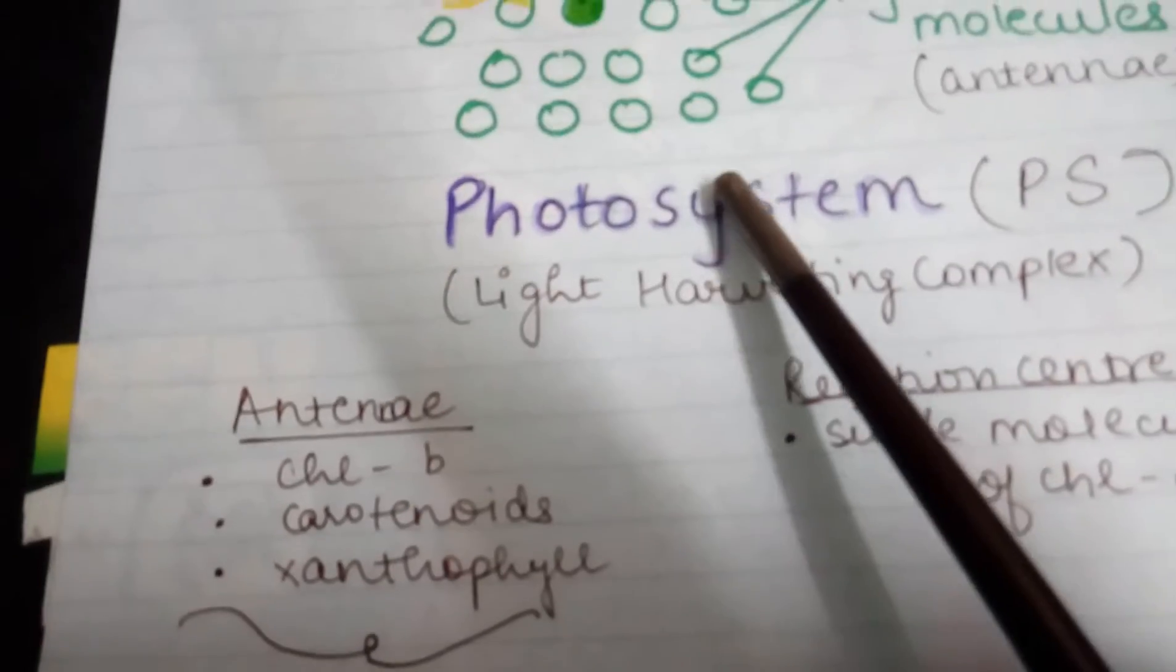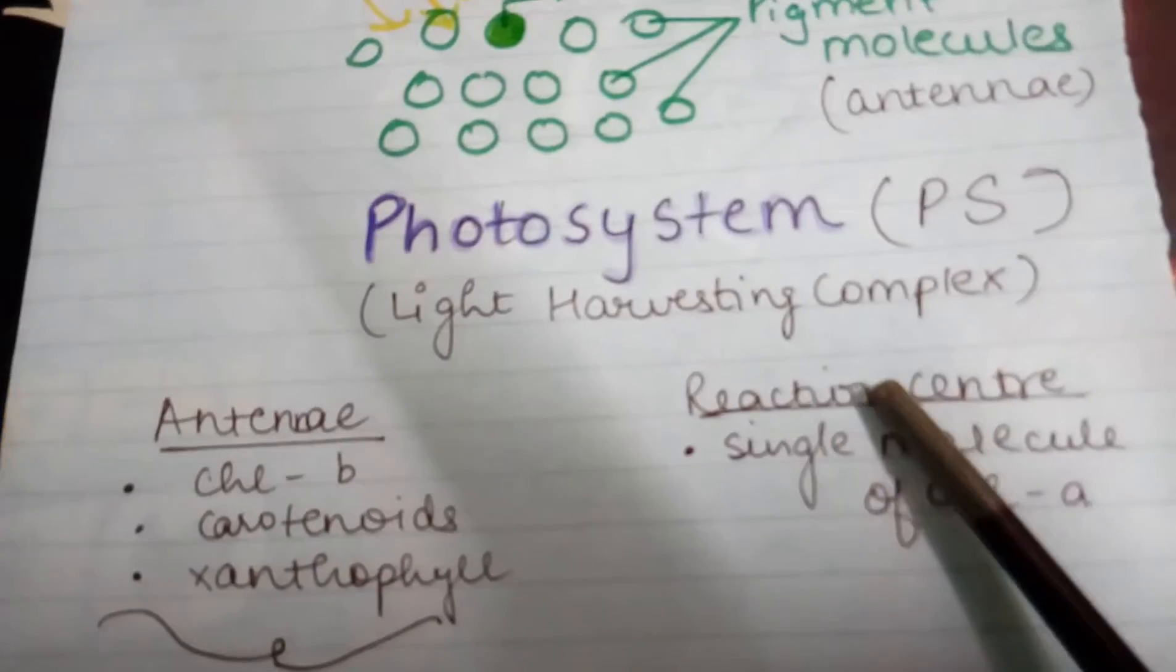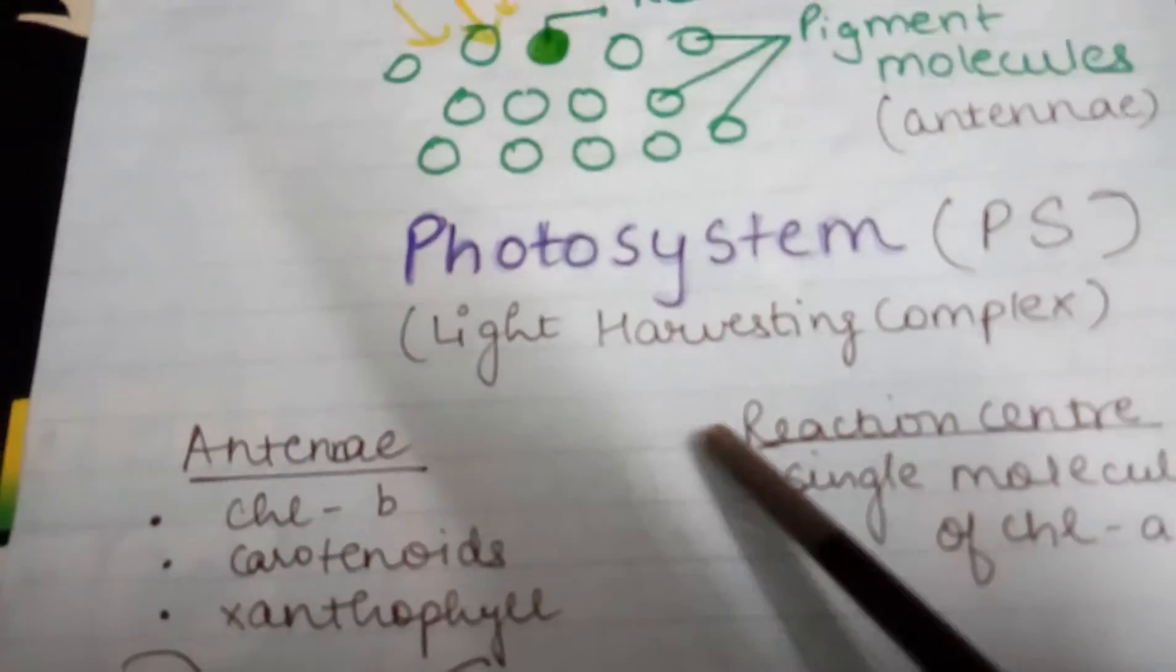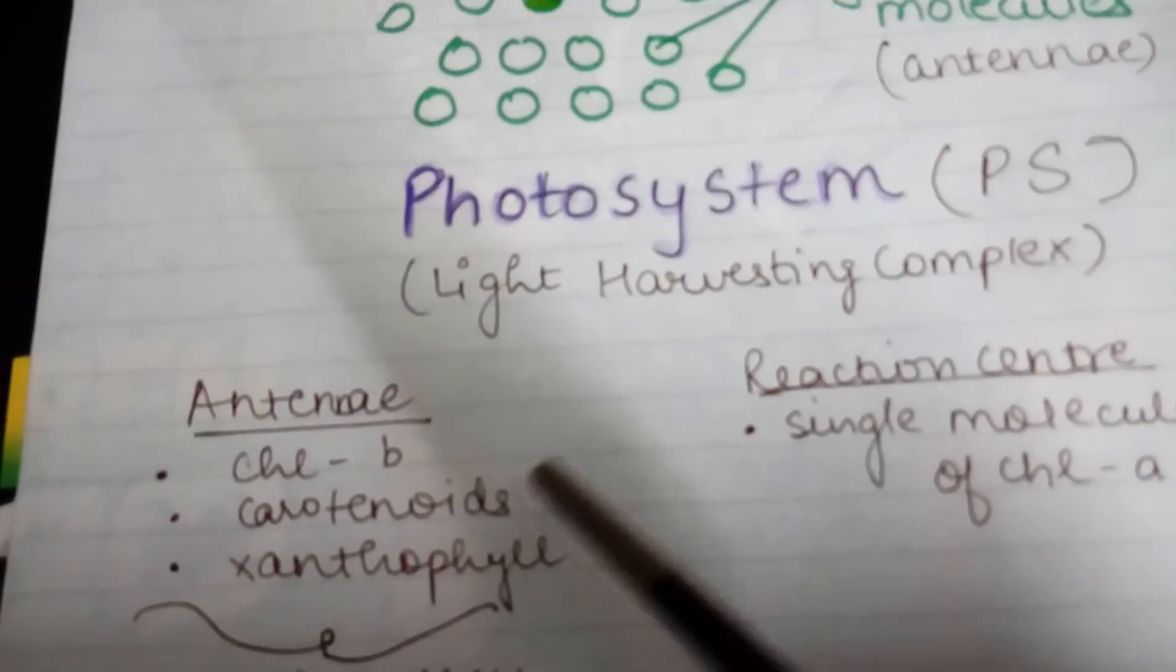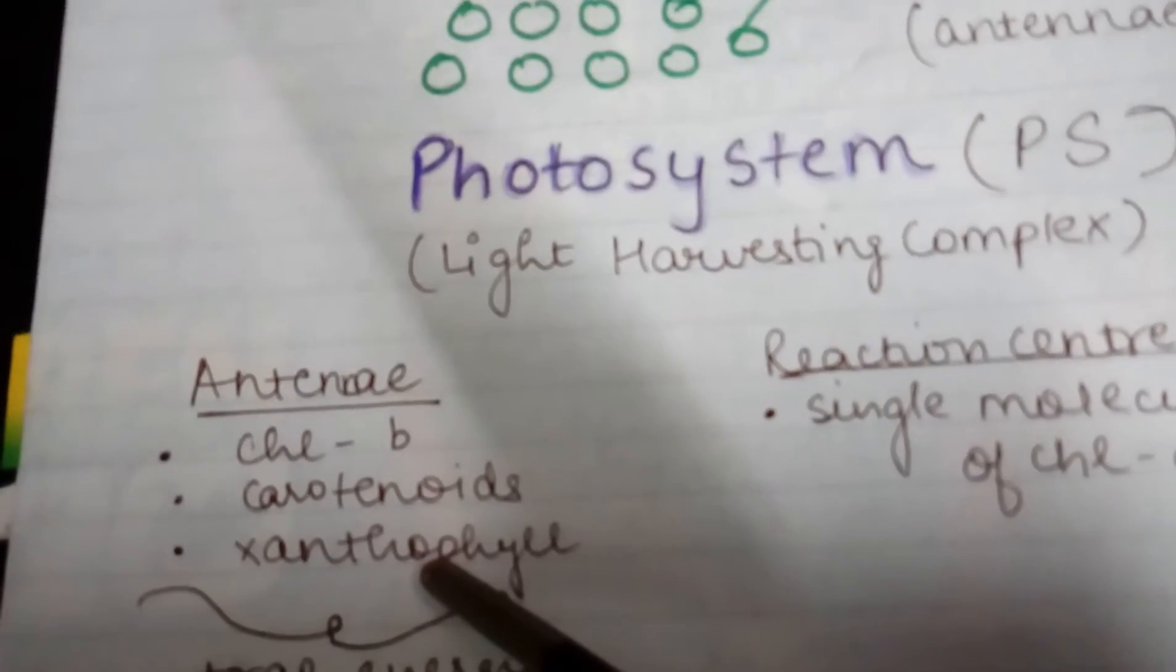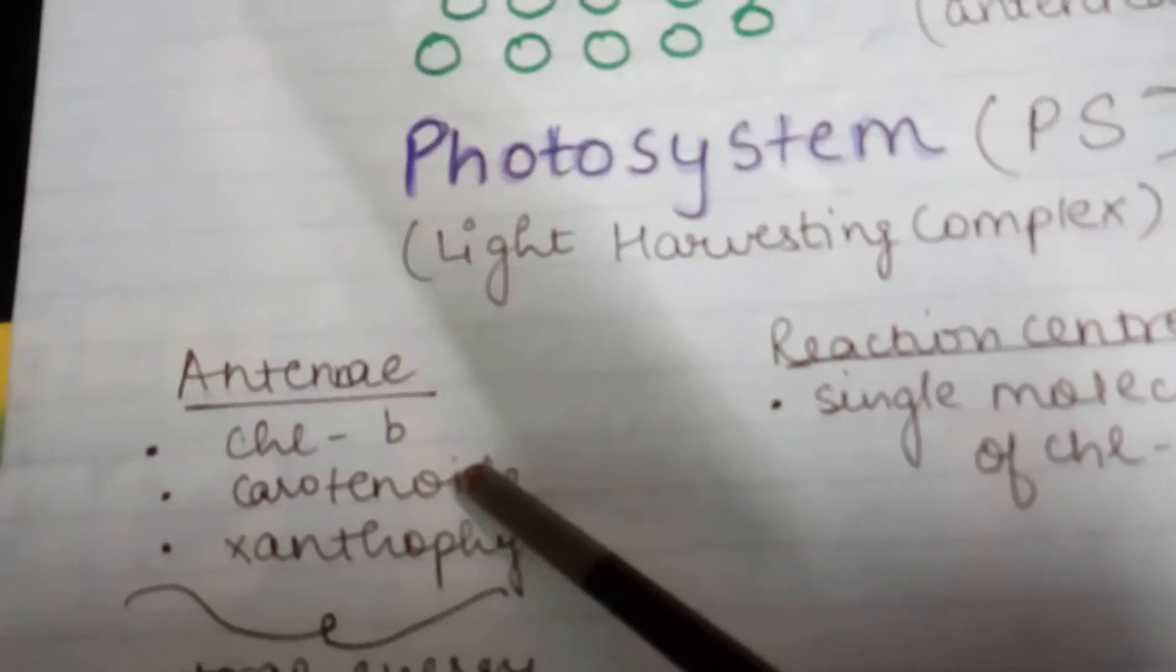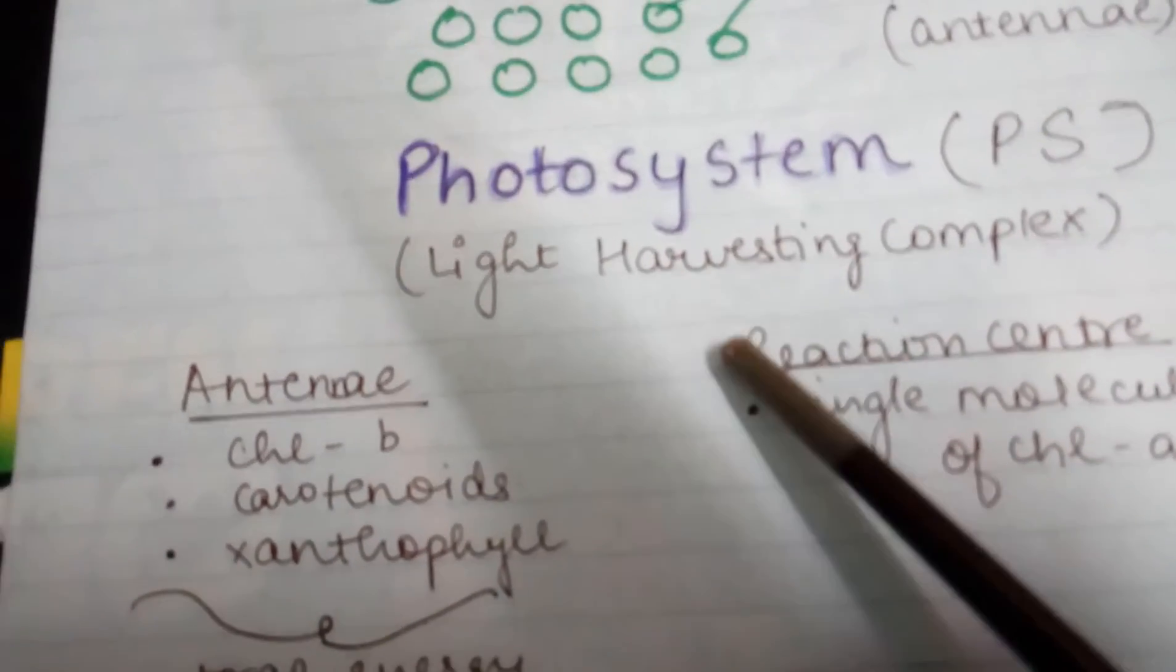Coming to the photosystems, a photosystem has two parts: antennae and the reaction center. Every chloroplast has four types of photosynthetic pigments: chlorophyll A, chlorophyll B, carotenoids, and xanthophyll. Chlorophyll B, carotenoids, and xanthophyll are not the primary photosynthetic pigments, they are the secondary or accessory ones because they trap light energy and give it to chlorophyll A.